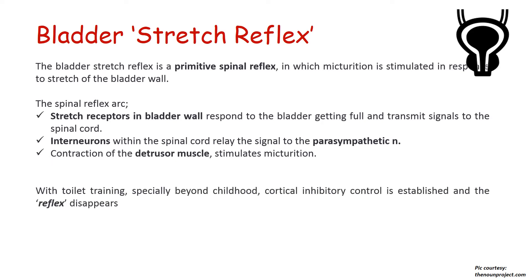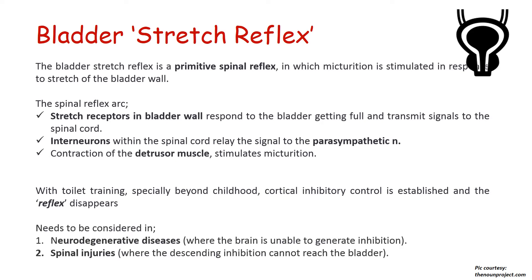With toilet training, especially beyond childhood, cortical inhibitory control is established, and when CNS maturity is achieved, this primitive bladder stretch reflex disappears. Even though this reflex is kept inhibited by the cortex normally as the child grows, it must be considered in certain conditions like neurodegenerative diseases where the brain is unable to generate cortical inhibition, and in spinal injuries where descending inhibition from the cortex cannot reach the bladder because the pathway is disturbed.